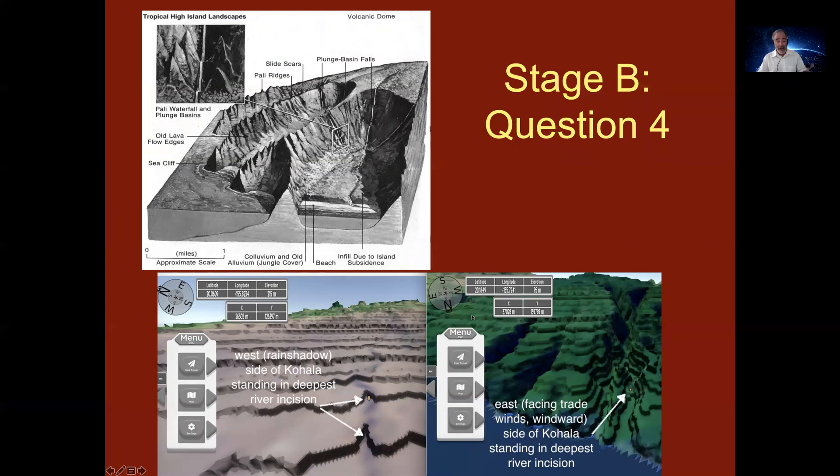And there's a dramatic contrast between the east-facing side and the west-facing side of Kohala. It's the same age volcano, but on the east-facing side, there's very deep river canyons. And on the west-facing side, there are only a few very shallow rivers.